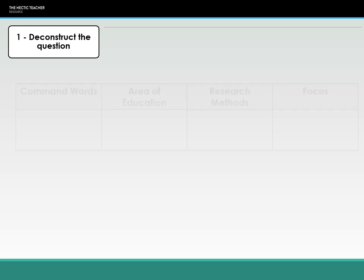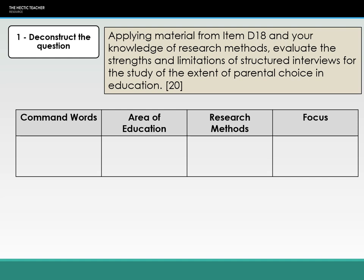Starting with deconstructing the question — this is not dissimilar to what you have done with other essays. We're still looking for command words and focuses. We also need to identify the area of education and the research method. For the purposes of this video and this lesson, we're going to be using this question: 'Applying material from Item V18 and your own knowledge of research methods, evaluate the strengths and limitations of structured interviews for the study of the extent of parental choice in education.' We still have the same command words as with the other essays.